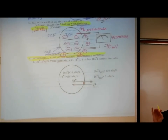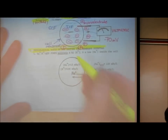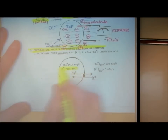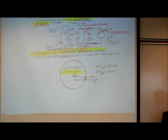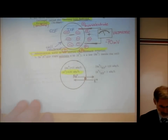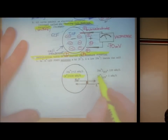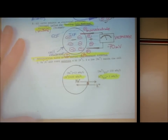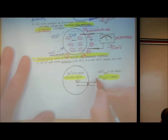Potassium is the single most important electrolyte. The normal concentration of potassium on the inside of the cell is about 150 milliequivalents per liter. The normal potassium on the outside of the cell is low — about 5 milliequivalents per liter. You must know that number. In fact it's really closer to four, but five is an easy number to remember. That's the normal potassium level in the extracellular fluid.